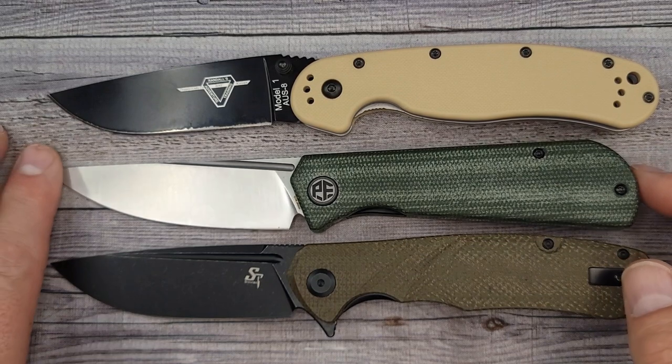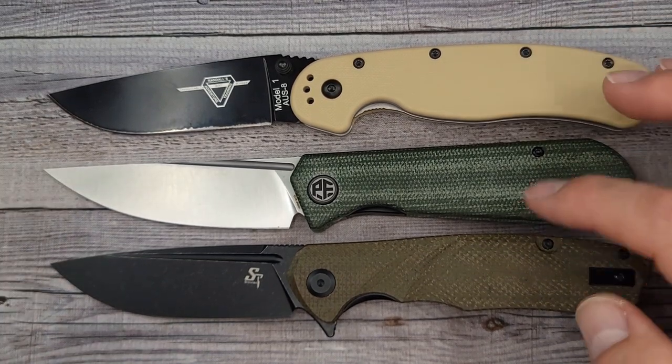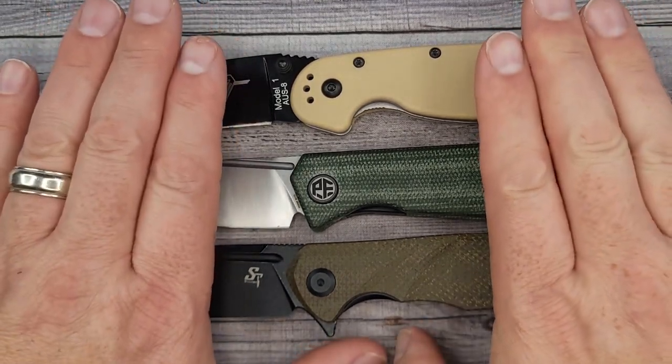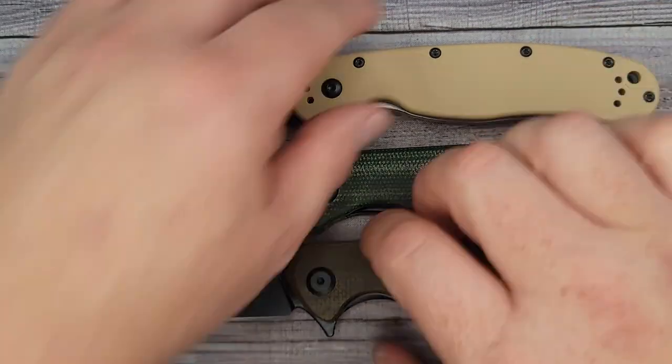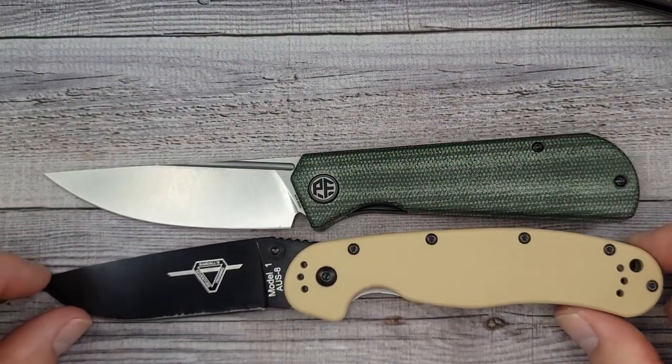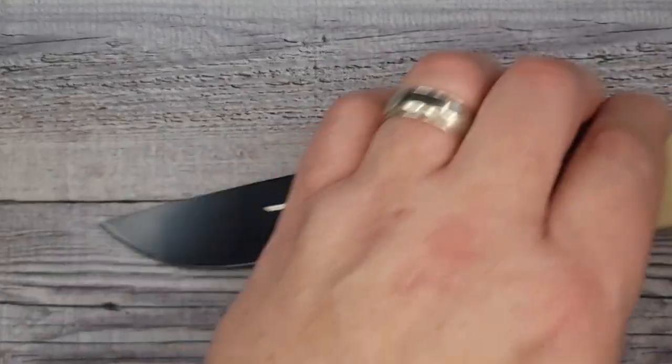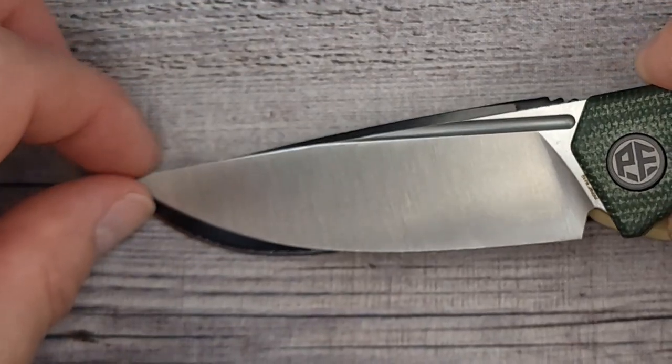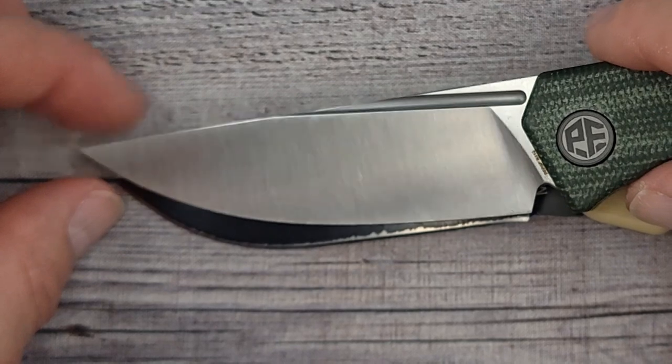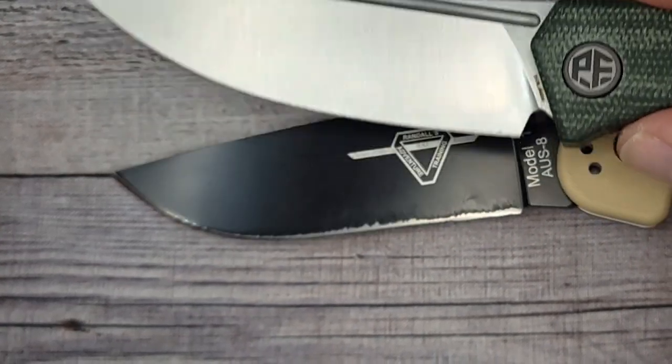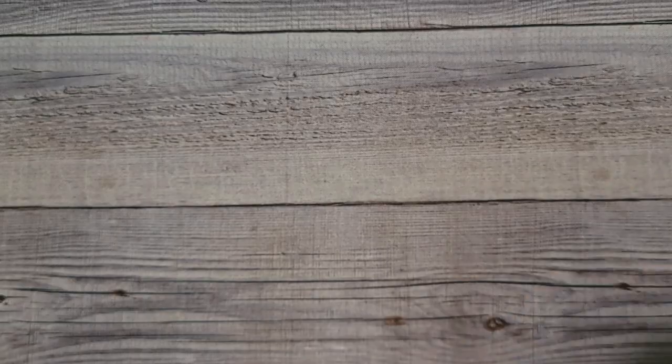I would say these two are really close. Now this looks a little bit longer because the angle of the camera is skewed up just a little bit. So if I bring this down here, watch what magically happens. They are much closer in size. So if I put the Ontario Rat blade up on top of this one, there's your sharpened edge. It does have more blade than the Ontario Rat.